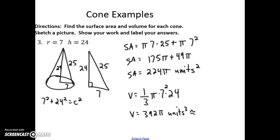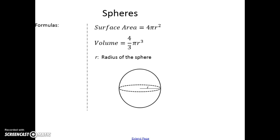For a decimal approximation of the cone volume, 392 times π gives about 1,231.5 units cubed. Now let's talk about spheres. The surface area formula is 4πr², and the volume is four thirds πr³. There are a lot of formulas here — make sure you're writing these down and do what you can to memorize them.